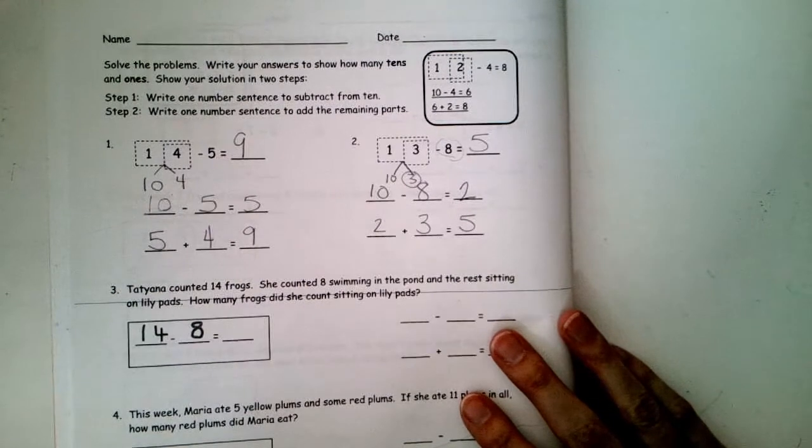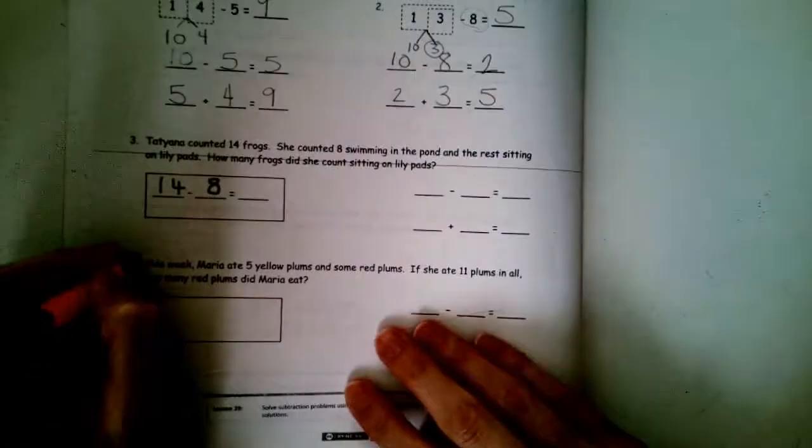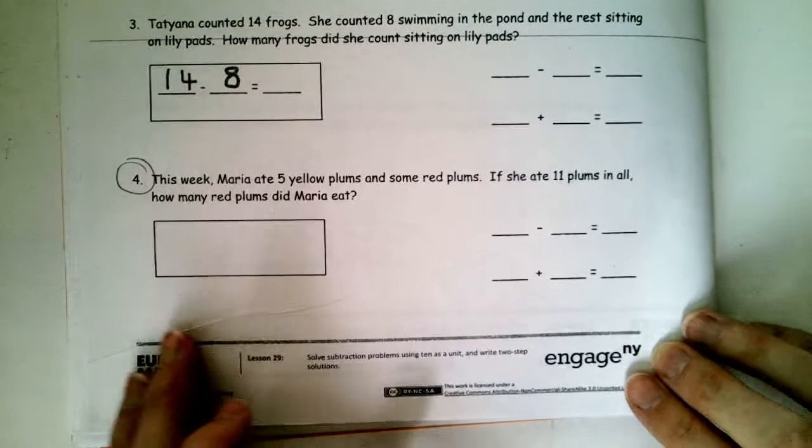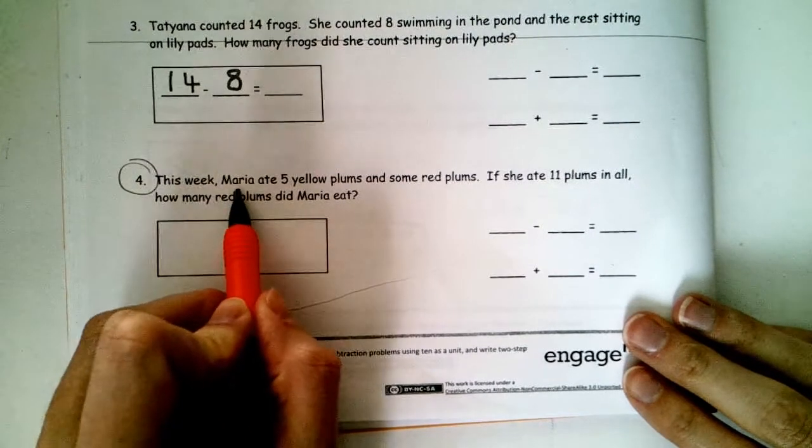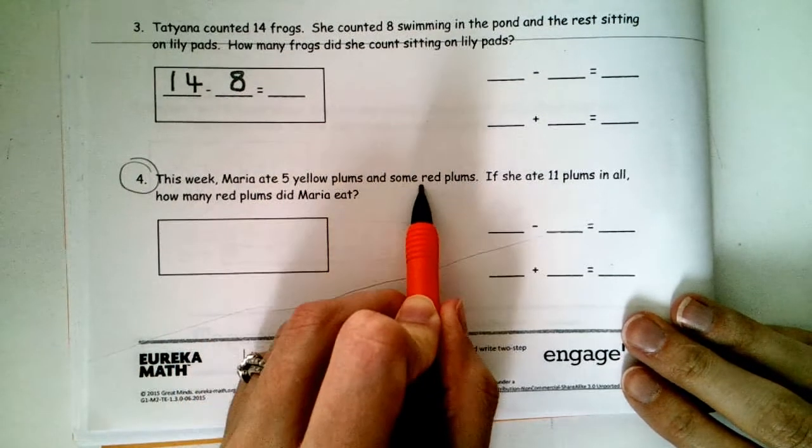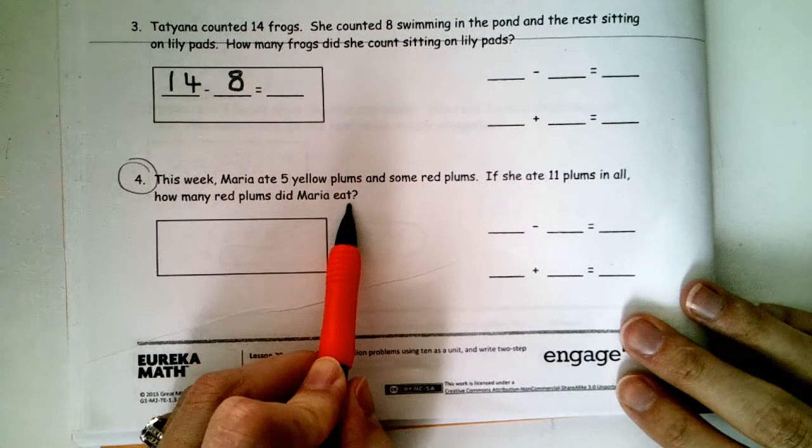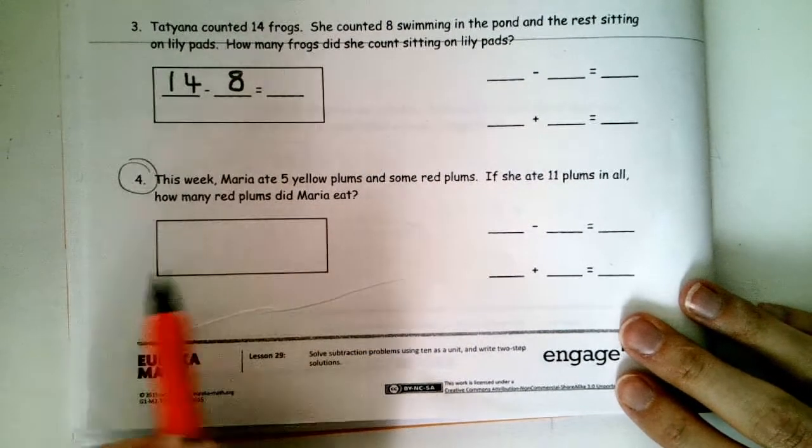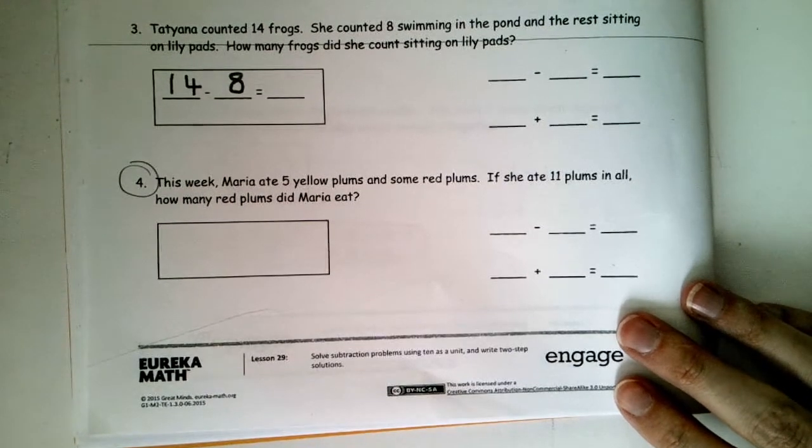Awesome. I can also check that by using the picture strategy. So, why don't we go ahead and try one of those ones out here. Why don't we skip down here to number 4, all the way at the bottom. Number 4 says, this week, Maria ate 5 yellow plums and some red plums. If she ate 11 plums in all, how many red plums did Maria eat? This box tells me and reminds me I need to write a number sentence in it.